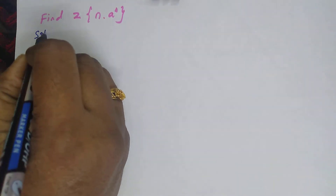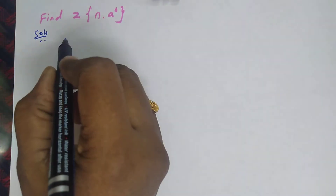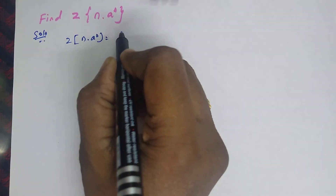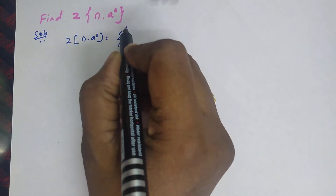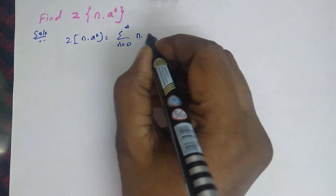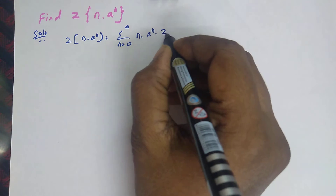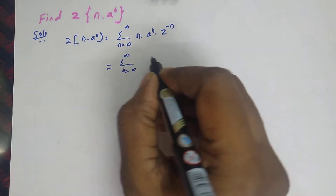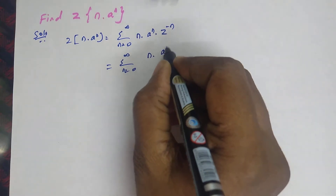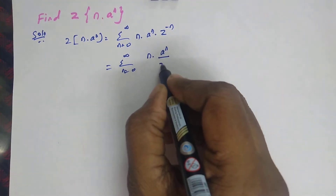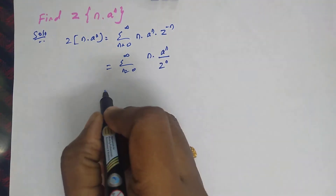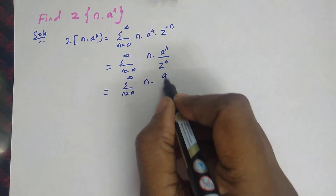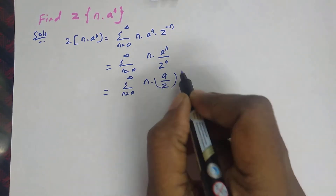We know very well that by the definition of Z-Transform, Z of n into a power n is equal to sigma n equal to 0 to infinity of n into a power n into Z power minus n, which is equal to sigma n equal to 0 to infinity of n into a by Z whole power n.